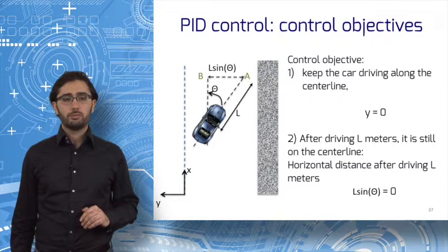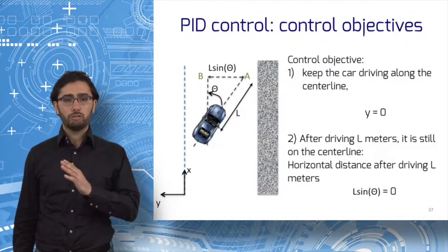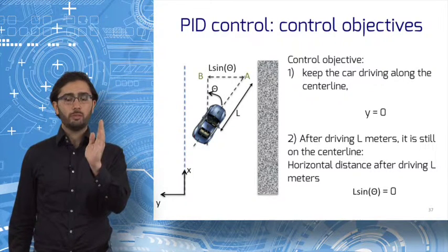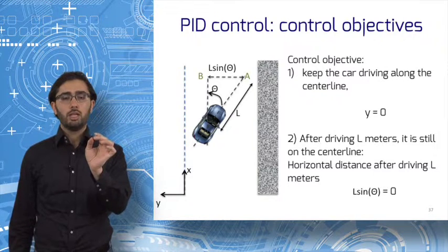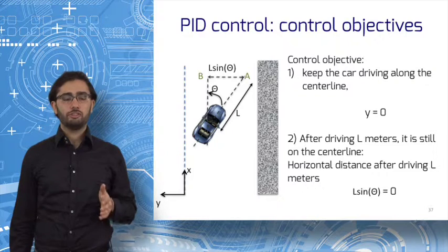You can follow this on the figure. If the car keeps driving at the current angle for another l meters, it will be at some point on the road. If it drives straight ahead, parallel to the walls for another l meters, it will be at another point on the road. The distance between these two, as you can easily verify, is l times sine theta.